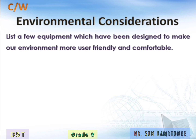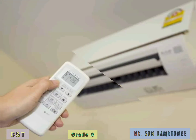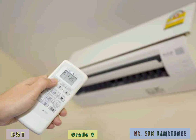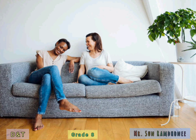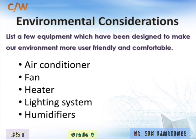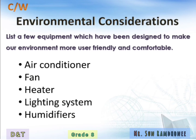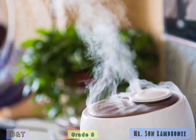In order to be able to control the environment, humans have invented or devised a few pieces of equipment. These can be air conditioners, fans, heaters, lighting systems, and humidifiers. When you feel very hot, you can switch on the air conditioner or the fan to feel comfortable. If it is very cold, you turn on the heater. For you to see properly in the room, you use the lighting system. And to make the air breathable, we use humidifiers.